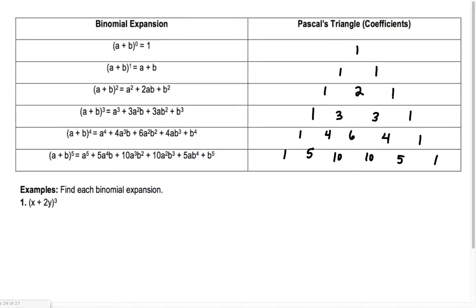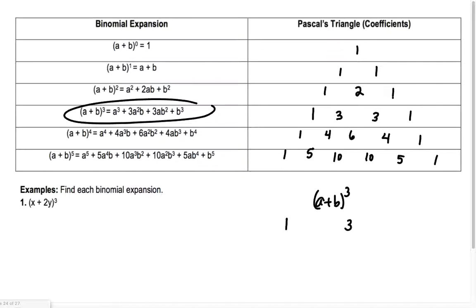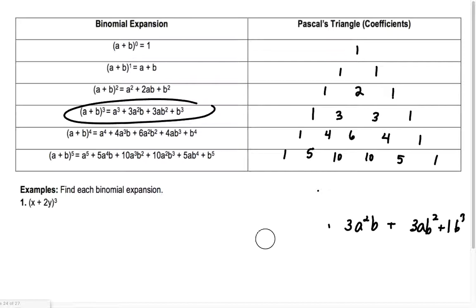Alright, so let's find each binomial expansion. If I have (x + 2y)³, I used to just write it with a's and b's first. Students would write the 3rd row of Pascal's Triangle — 1, 3, 3, 1 — then put the a's going down (a³, a², a) and b's going up, connecting with pluses. But then I thought, why waste time with a's and b's? Let's go right to what a is and what b is. Here, a = x and b = 2y.